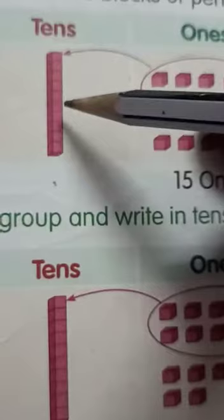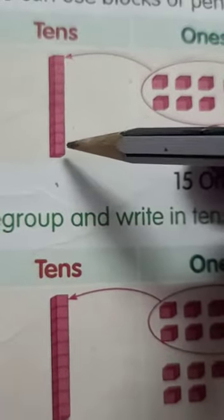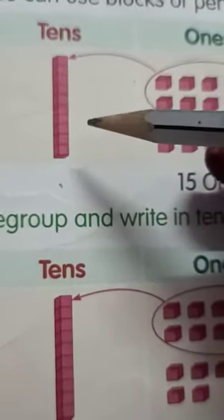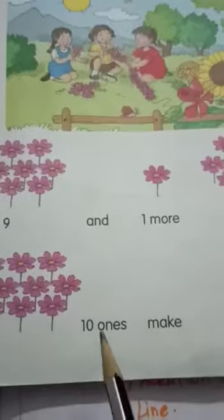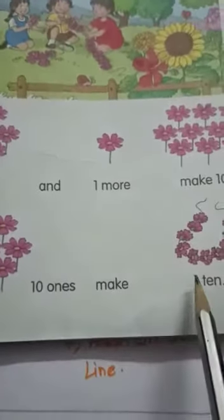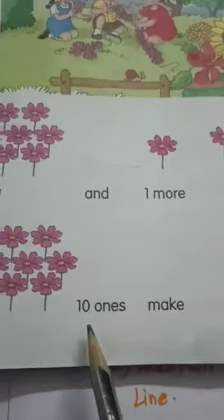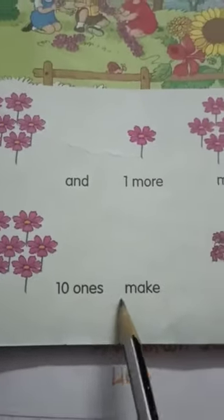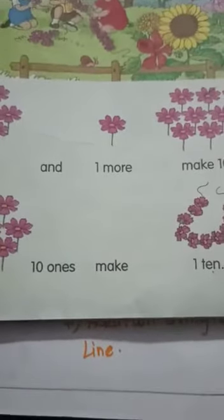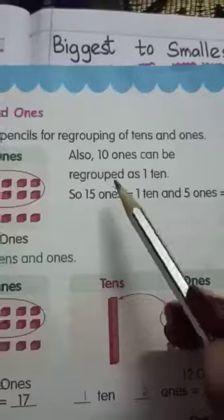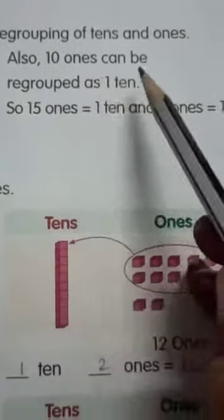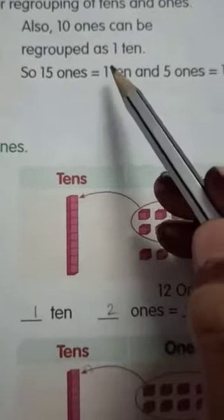We have 10 ones. In the last video, already we have learned, 10 ones make 1 ten. So, 10 ones can be regrouped as 1 ten.